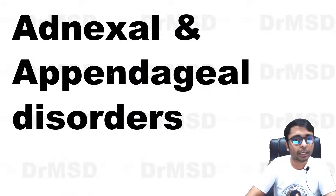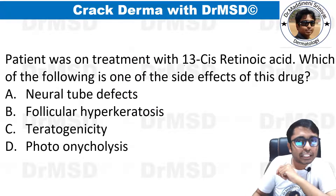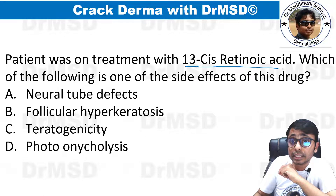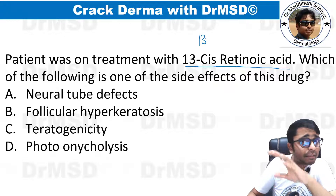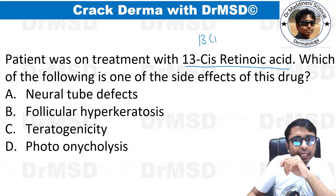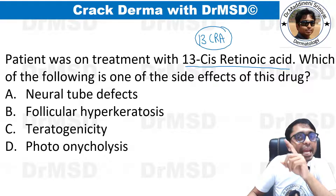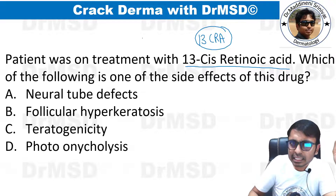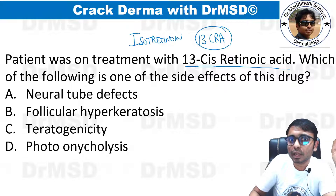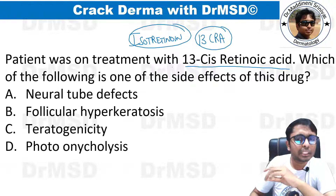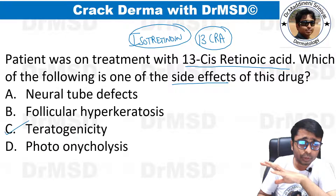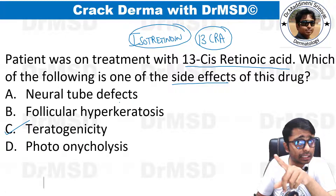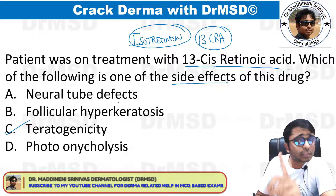A patient was on treatment with 13-cis retinoic acid, which is the other name for isotretinoin. The most important side effect of isotretinoin is that it is very notorious for producing teratogenesis. This is the reason why countries have very stringent rules regarding its usage.